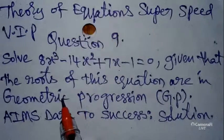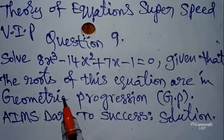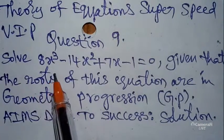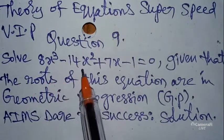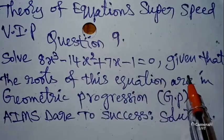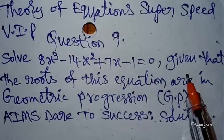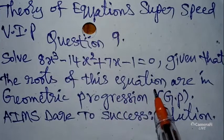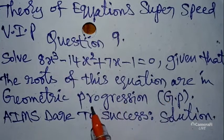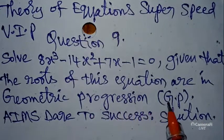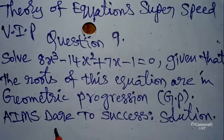Today our question is: solve 8x³ minus 14x² plus 7x minus 1 equals 0, given that the roots of this equation are in Geometric Progression.